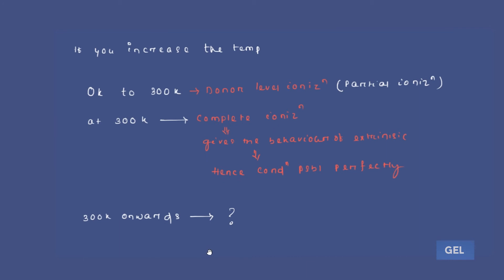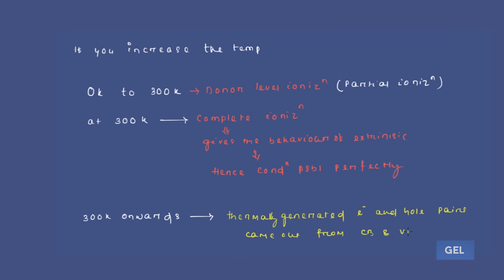What happens after 300K? If we increase the temperature after 300K, thermally generated electron-hole pairs come out from the conduction band and valence band by breaking the covalent bond — thermally generated electron-hole pairs are created.